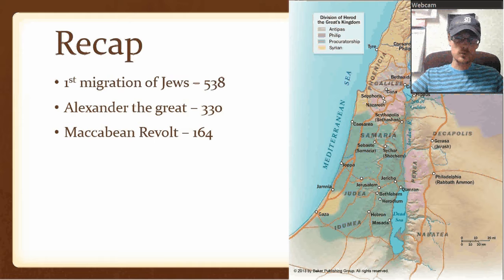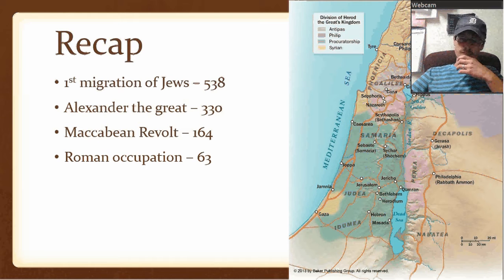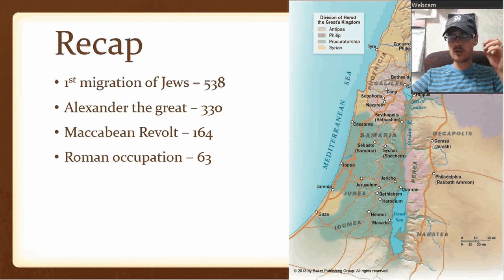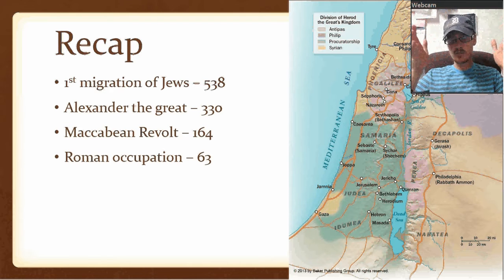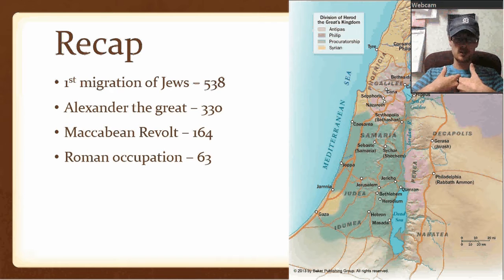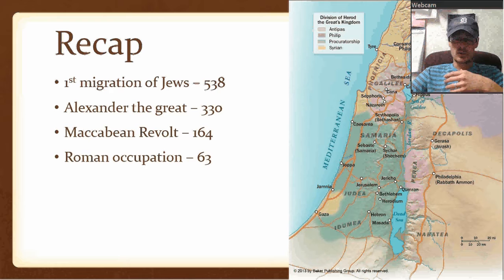That takes us to the books of the Maccabees — the extra-biblical books that happened between the Old and New Testament but are not part of the Bible. Long story short, Rome comes in to help, kind of. There's this tiff between the Maccabees and the Hasmoneans, and Rome just takes over. That's in 63 BC.